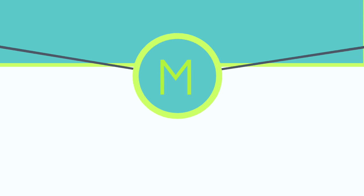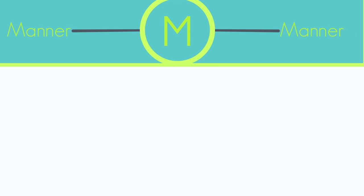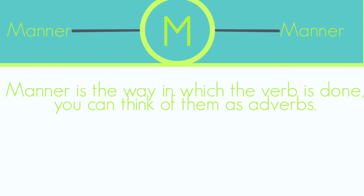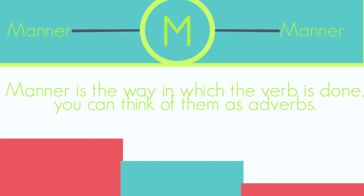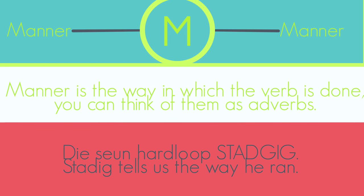The next letter is M, which stands for MANIER. MANIER is the way in which the verb is done. You can think of them as basic adverbs. For example, STADIG can be a MANIER word. In a sentence, it would say, DIE TREIN HARDLOOP VANDAG STADIG. It tells us that the TREIN RAN SLOWLY.